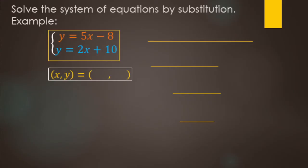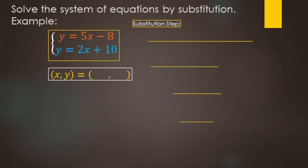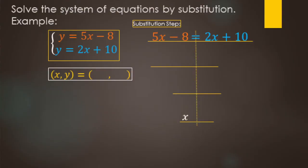To solve this system of equations by substitution, we replace a variable with an equivalent expression. Both equations say y equals, so looking at the top one: y equals 5x minus 8. We can replace y in the bottom equation with 5x minus 8. Taking the bottom equation 2x plus 10, we replace the y with 5x minus 8. Now we have one equation with one variable and we're ready to solve.